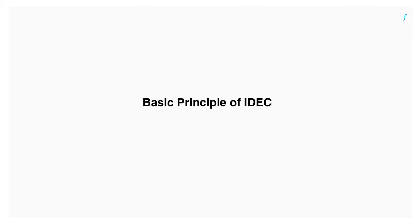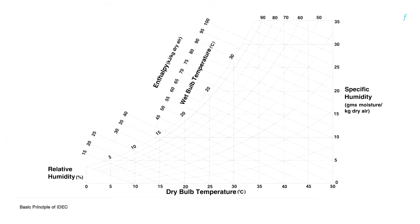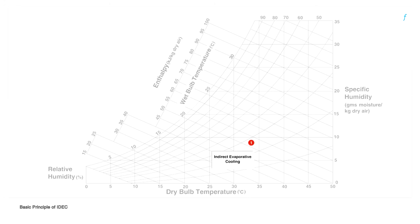The basic principle of indirect direct evaporative cooling can be understood using a psychrometric chart. Indirect direct evaporative cooling involves cooling warm air first with a sensible heat exchanger. This is the first stage or the indirect stage where sensible cooling takes place and we see a reduction in the dry bulb temperature without any change in humidity.